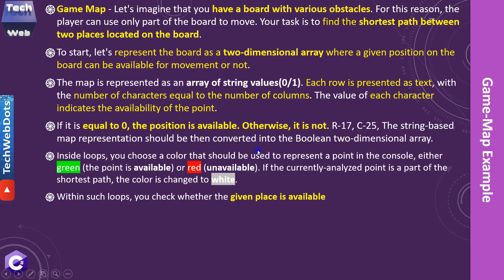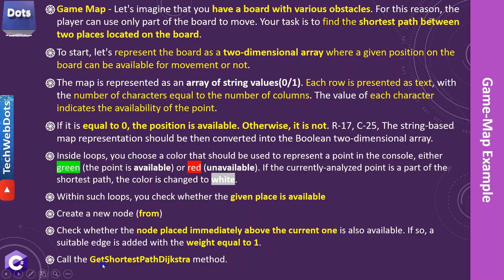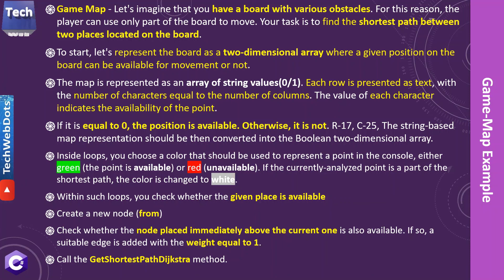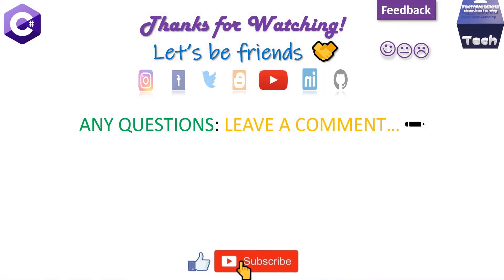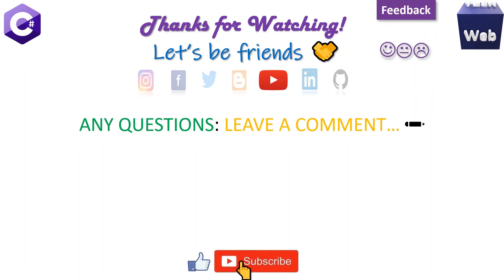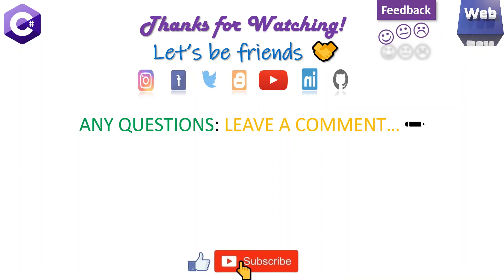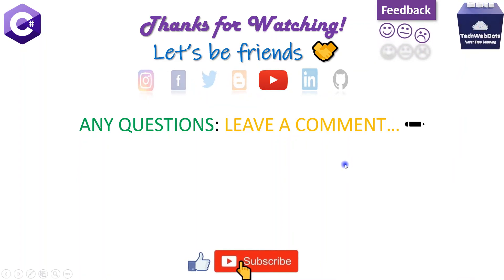We are using these colors: green for available, red for blocker, and white is part of the solution. Within nested loops we are checking either a place is available and creating from-node and to-node. At the end we are calling the get shortest path Dijkstra algorithm method that we discussed in detail in my previous session. I hope it is clear what we are doing in this session — only the game map implementation, not the Dijkstra one. If you have any doubt or issue you can drop a comment in the comment box, I will try to answer as soon as possible. Your feedback is very important — that's the only inspiration for me to create such videos. See you in the next video, till then bye bye.